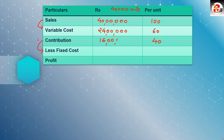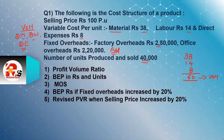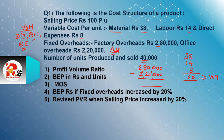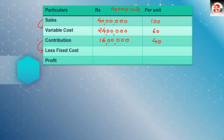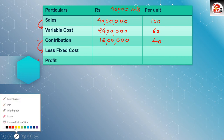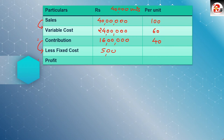Contribution is Rs. 16,00,000. Now for fixed overheads: fixed factory overheads are Rs. 2,80,000 and office overheads are Rs. 2,20,000. Adding both gives total fixed overheads = Rs. 5,00,000. Now substituting: fixed cost per unit = 5,00,000 ÷ 40,000 = Rs. 12 per unit.